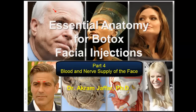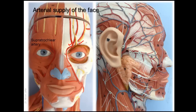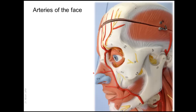I will also briefly outline the blood supply and nerve supply of the face. In the face there are branches of the external and internal carotid arteries. The branches of the internal carotid artery are the supraorbital and supratrochlear arteries. The branches of the external carotid artery include the facial artery, the superficial temporal artery, and the infraorbital artery.